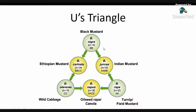Another example of inter-specific hybridization can be understood by U's triangle — the origin of Brassica species by inter-specific hybridization. Brassica carinata by crossing Brassica nigra and Brassica oleracea; Brassica napus by crossing Brassica oleracea and Brassica rapa; and Brassica juncea by crossing Brassica nigra and Brassica rapa.